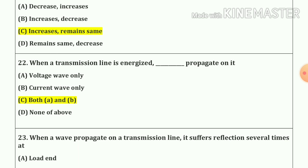Question number 22. When a transmission line is energized, blank propagates on it. Our answer: when a transmission line is energized, both voltage wave only and current wave only propagate on it — option C, both A and B.